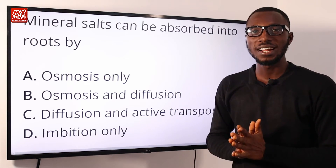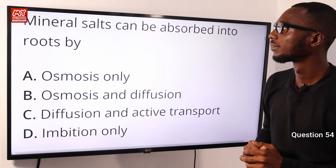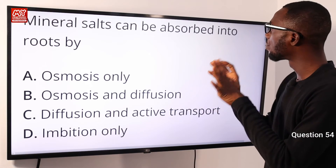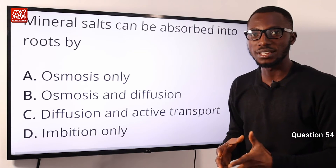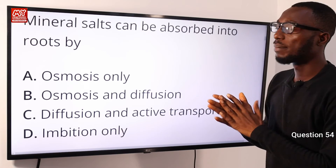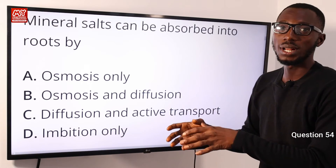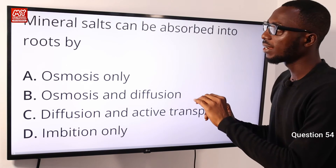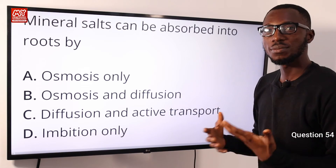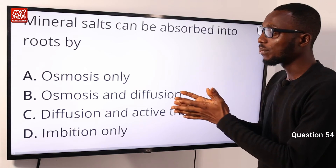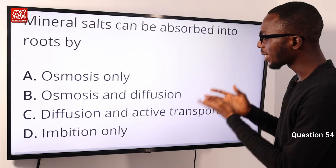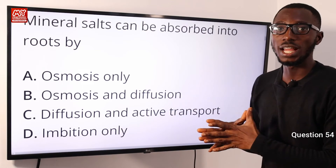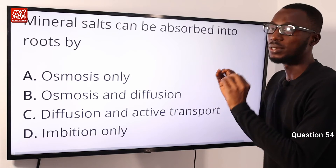Question 54: Mineral salts can be absorbed into the roots by what process? By osmosis, water from the soil is absorbed by the roots. Mineral salts cannot just be absorbed by simple diffusion alone, and that is why active transport is involved. So the correct option to the question we are given is option C.